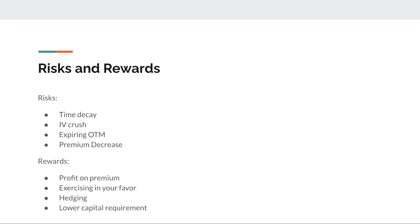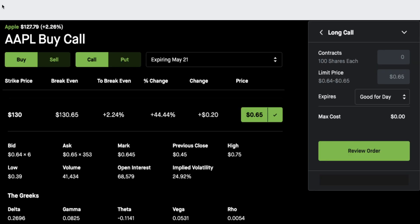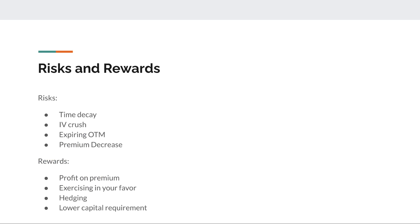The rewards on options: profit on your premium — the opposite of the decrease. Exercising options in your favor — for example if Apple is at $131 on May 21st, you can exercise and for every contract buy 100 shares at $130 instead of $131, making a dollar profit per share. Then there's hedging — great especially for selling calls and puts. If you own a large equity position, you can hedge by selling calls against it, which a lot of hedge funds do. If you want long-term capital gains but think the stock might underperform a quarter, sell calls against your shares and collect premiums.